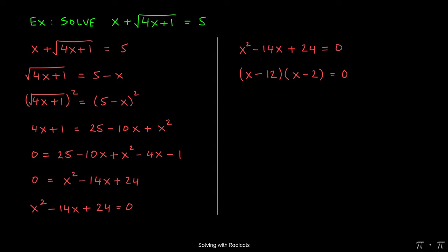At this stage, we can invoke the zero product property and state that either x minus 12 must equal 0, which indicates that x must equal 12, or x minus 2 must equal 0, which indicates that x will be 2. Both of these are potential solutions. We don't know that both of them will work or check in the original equation we were given. Since the original equation had an even root, a square root, we have to check our answers.